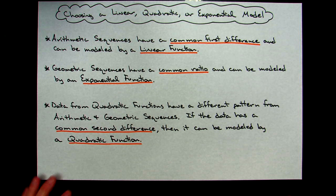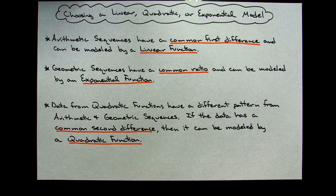Today we're going to be taking a look at how you can determine if a table of values is either linear, quadratic, or exponential.